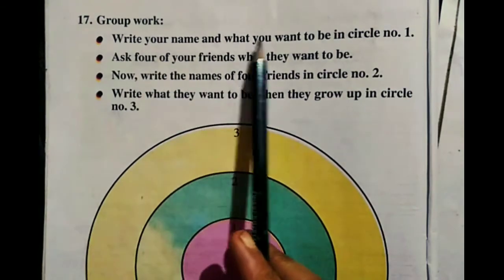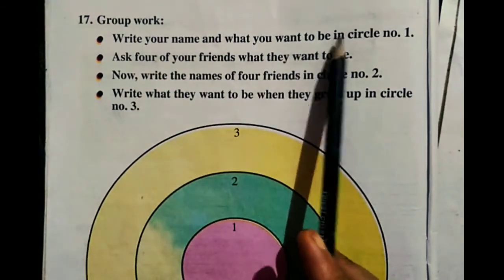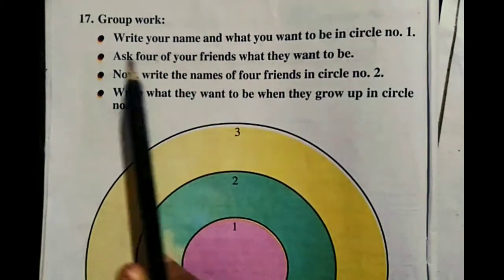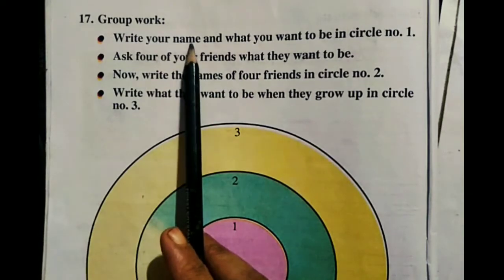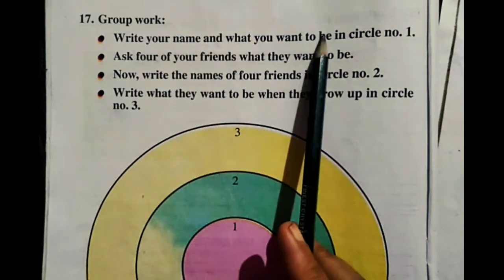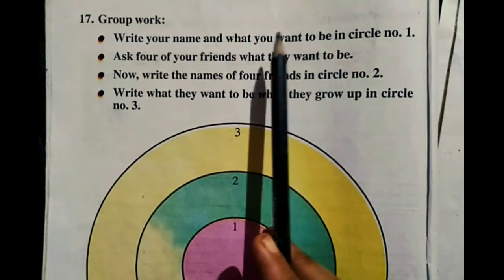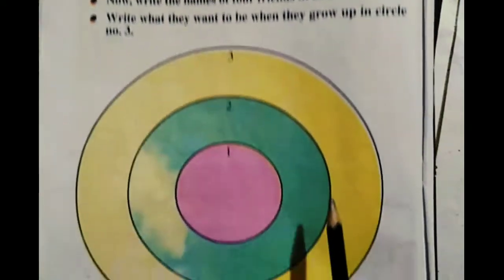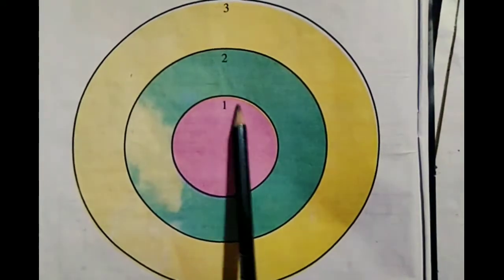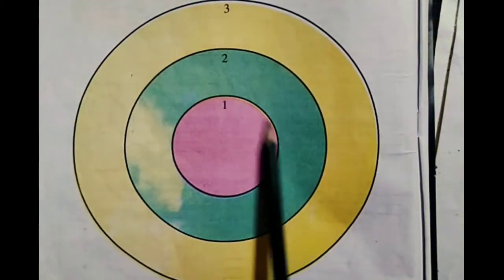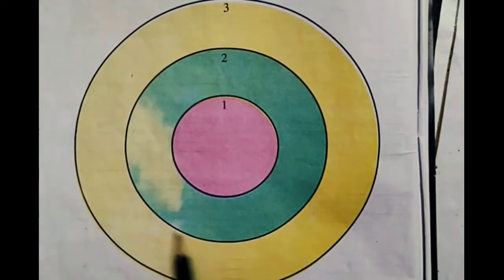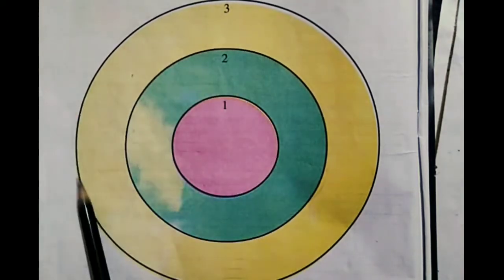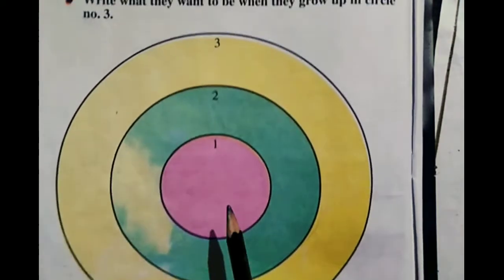Write your name and what you want to be in circle number 1. Circle number 1 is written in circle number 1. Green colour is circle number 2 and yellow colour is circle number 3.